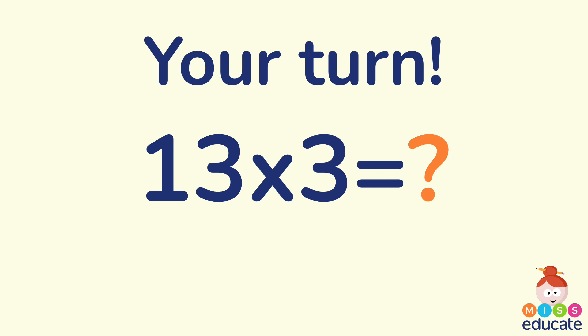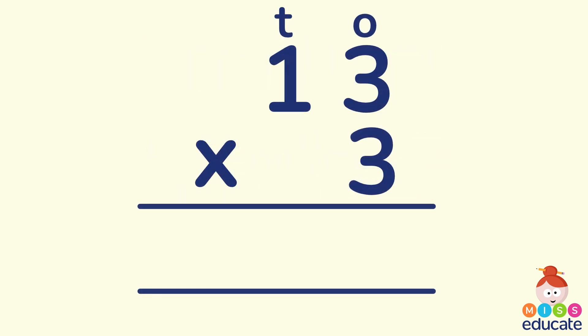Let's have a look. 13 times 3. Now you've watched the first part of the video again. How would you lay this out for short multiplication? Think of your columns again and see if you can have a go on a piece of paper or a whiteboard. Hopefully you've laid your sum out like this with the 1 in the tens column and the 3 in the ones column and then your multiplication symbol. And of course we're multiplying the whole lot of 13 by 3 so that goes underneath.